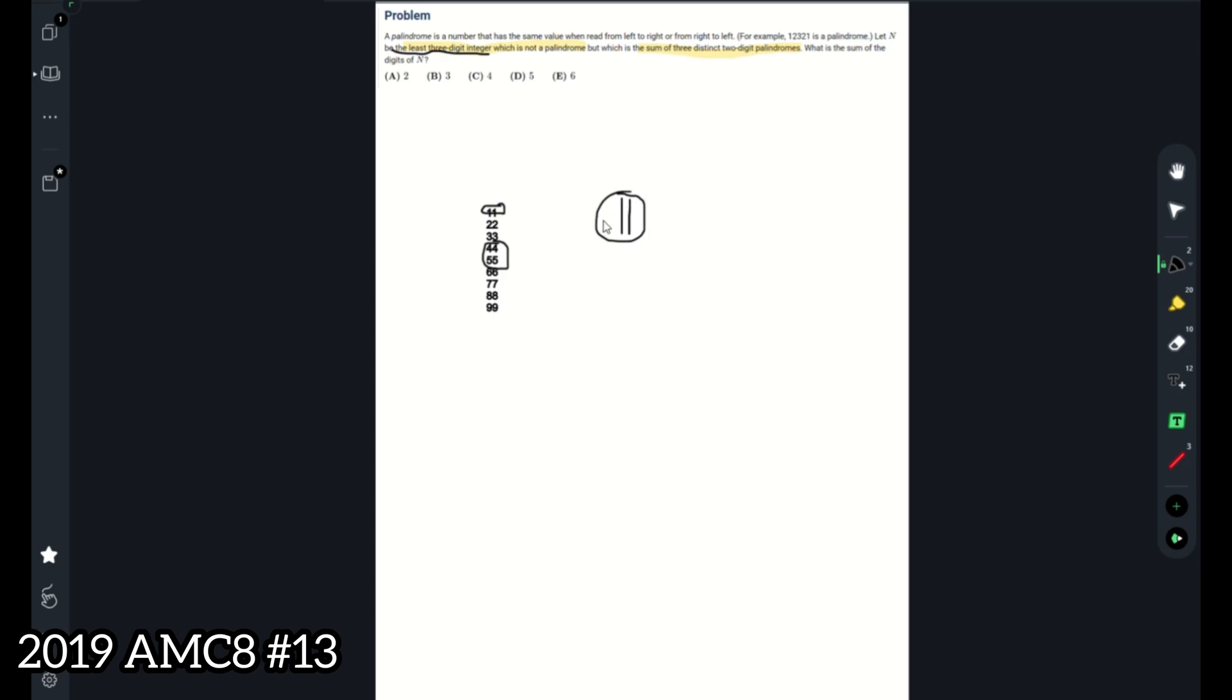If we include 11, we now have to add on some other integer to make it a number that is not a palindrome. So if we add 88, this would be equal to 99. Which means if we next add 99, then it will be 110. This is the smallest and least one we can get.